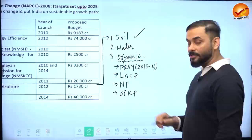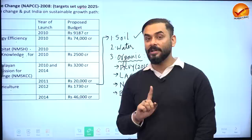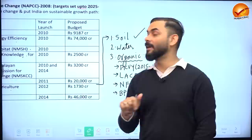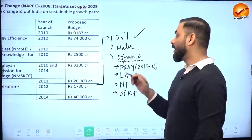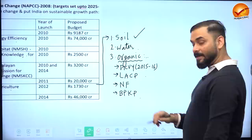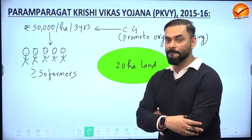Under the National Mission for Sustainable Agriculture, the government started soil health card programs — if soil has enough nitrogen but lacks phosphorus, only phosphorus-based fertilizer should be added. Water management for irrigation is also important. The third pillar is organic farming — using as few chemicals as possible. Four schemes were launched under this mission for organic farming in India.